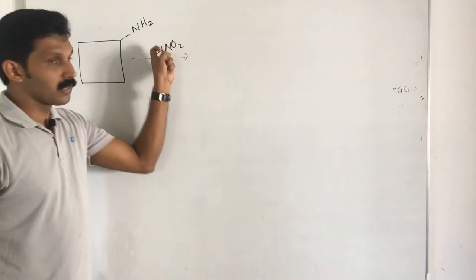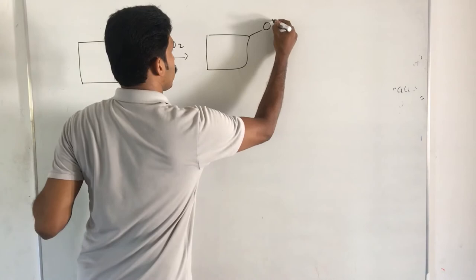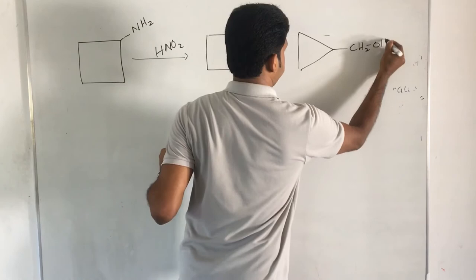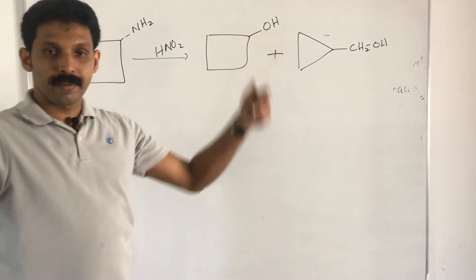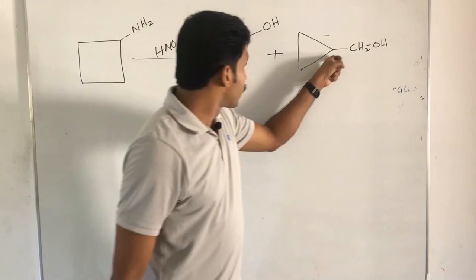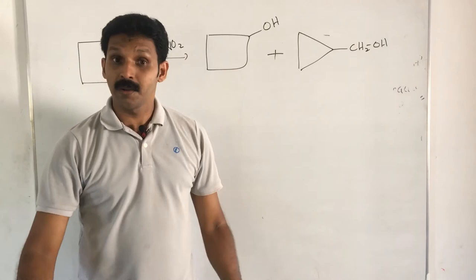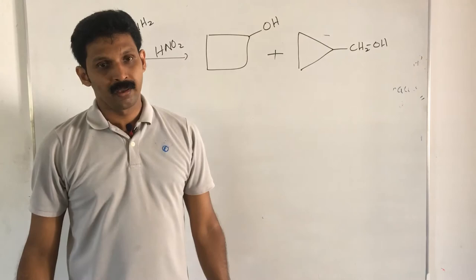Consider cyclobutanamine reacting with nitrous acid. You get two answers: one where NH2 is replaced by OH directly, and another where NH2 is again replaced by OH but instead of ring expansion there is ring contraction. This ring contraction is one of the peculiarities of the Demjanov reaction — there is a possibility of both ring expansion and ring contraction when cyclobutanamine is reacted.